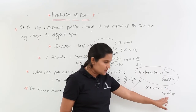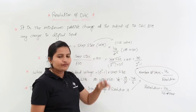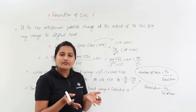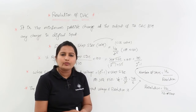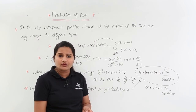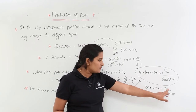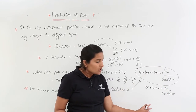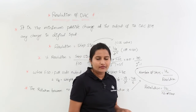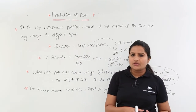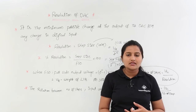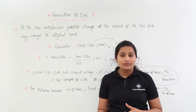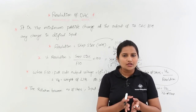You can use this formula for resolution directly, or if only step size is available, take that directly. If step size is not available but you have input voltage and number of steps, calculate step size as Vin divided by number of steps to get resolution. This formula is very important for DAC problems. On this topic of DAC resolution, there are GATE model problems which we will discuss in the next class.